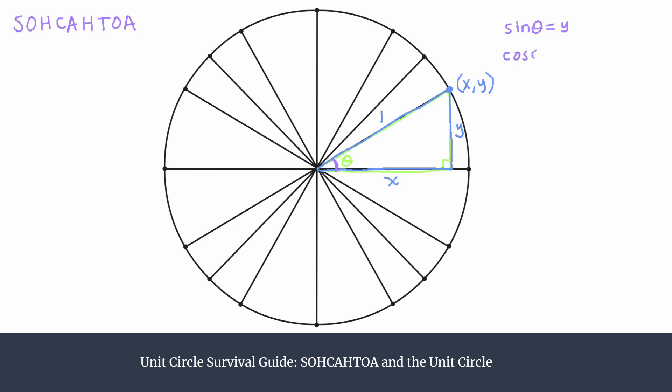You'll see it works pretty similarly for cosine. We know that cosine is the adjacent over the hypotenuse, so in this case the adjacent side to our angle theta is X. The hypotenuse is 1, so the cosine of our angle will simply be the X coordinate from the unit circle.